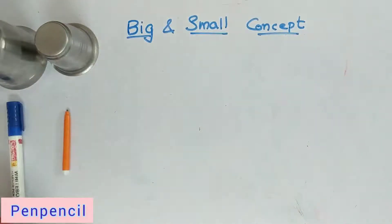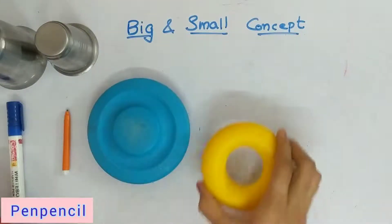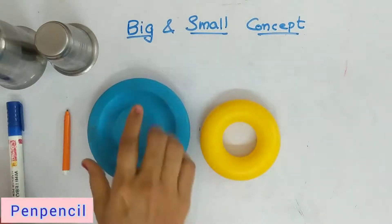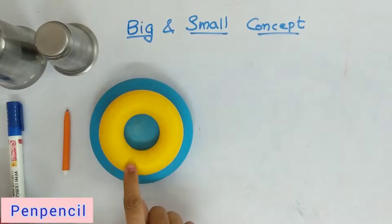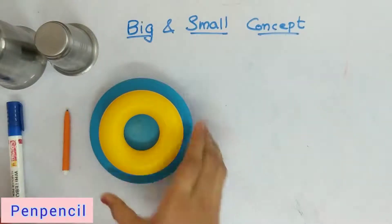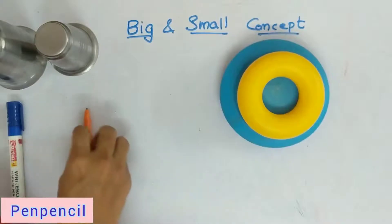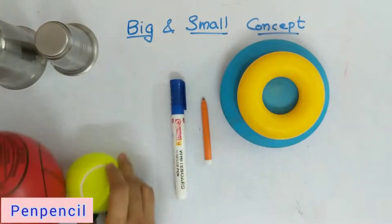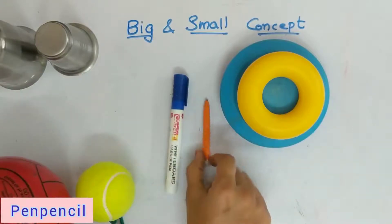Now one more toy — this is the bigger one, this is the smaller one. See the size: this is bigger, this is smaller. Now, once again, will you tell me all? Bigger pen, smaller pen.